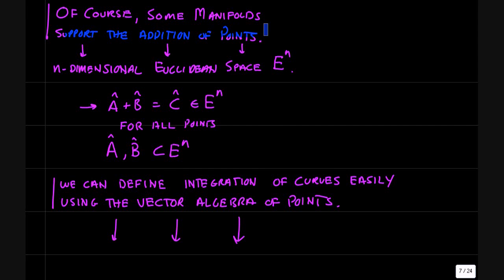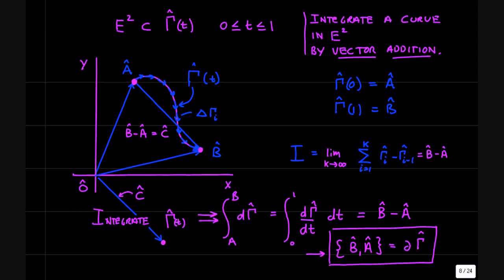Now what about if we have manifolds where you can add points together? Some manifolds allow you to add any points and get another point. If a and b are elements of the manifold E^n, then a plus b equals c is also an element of E^n, and that's for all points in the manifold. So if we have this type of addition, it's straightforward to define the integration of curves. And you've probably seen this in classes. It's used all the time in electromagnetism, line integrals, and so forth.